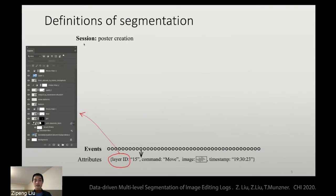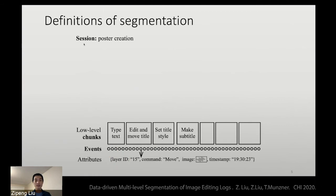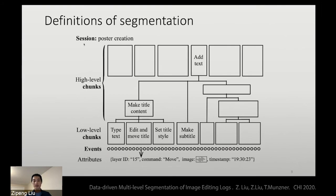Let's define the segmentation problem. Suppose you have a sequence of events in a poster creation session, and each event is associated with a bunch of attributes like command name, the image content, the timestamp, and the current active layer, which is the current visual object you are operating on. Then we can chunk a continuous subsequence of events into low-level chunks. You can further group these low-level chunks into higher-level chunks and construct a hierarchical structure.